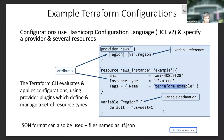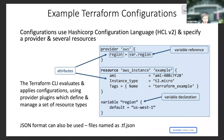Down here we also have a variable definition. Up here we'd refer to this as var.region. Normally, our variables we will put in a separate configuration file — here, just for the slide, it's put in the same file. So we define region as a variable and we assign it a default value of us-east-1.